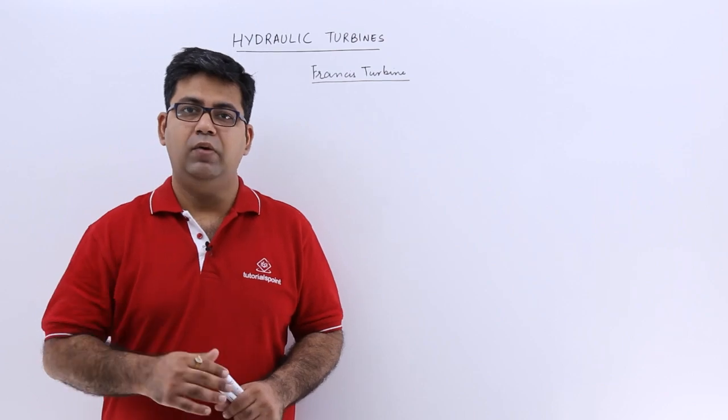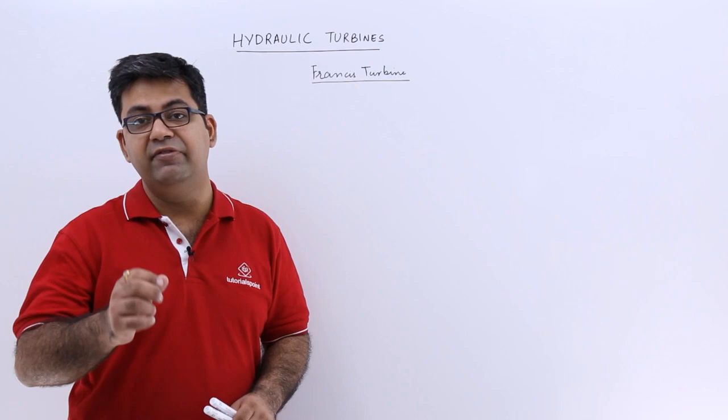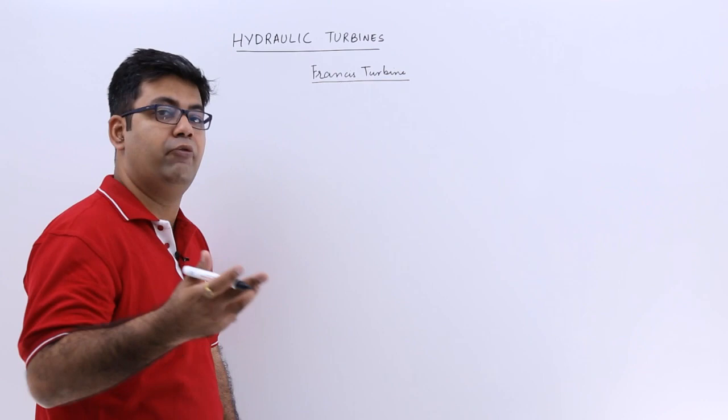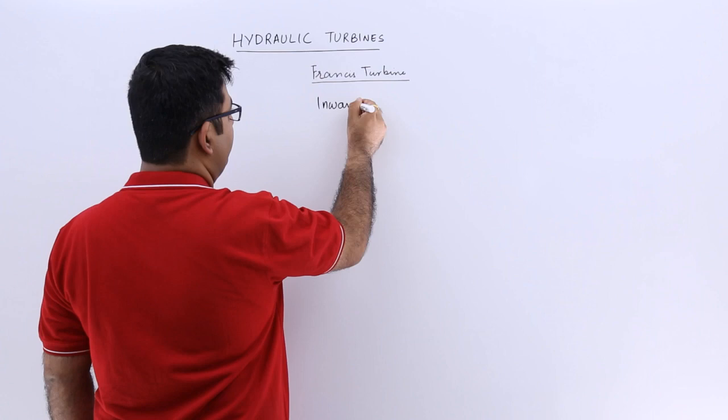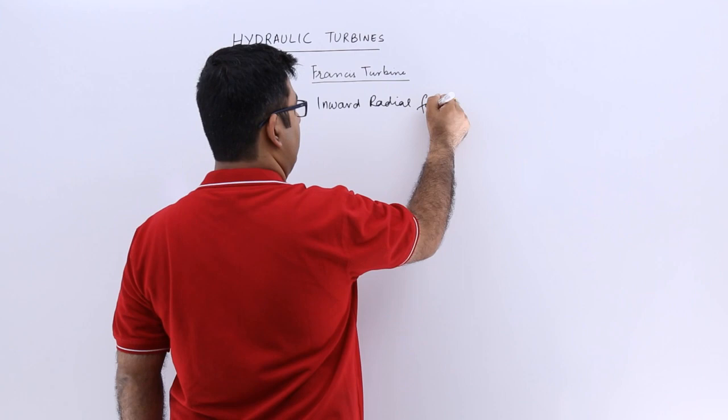Now let's talk about the Francis turbine. Francis turbine is also an inward flow reaction turbine. It's a radial turbine in which the flow of water is radial in action. So this is an inward radial flow reaction turbine.